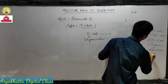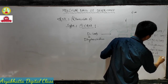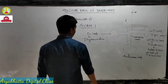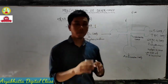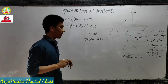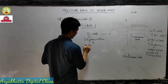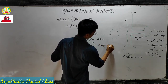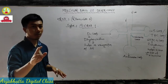Each loop has a specific function: the T loop helps in recognition of the ribosome. The anti-codon loop contains nitrogenous bases called the anti-codon - we will see that when we discuss genetic code. The D loop helps in recognition of the amino acid.